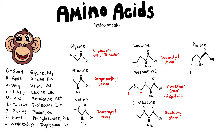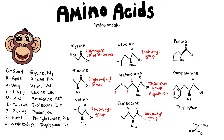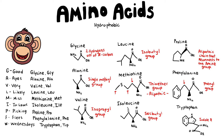Finally, we have proline, phenylalanine, and tryptophan. Proline has an aliphatic chain that reconnects to the amine group on the alpha carbon, and then we have a phenyl group on the phenylalanine and an indole ring with the tryptophan.